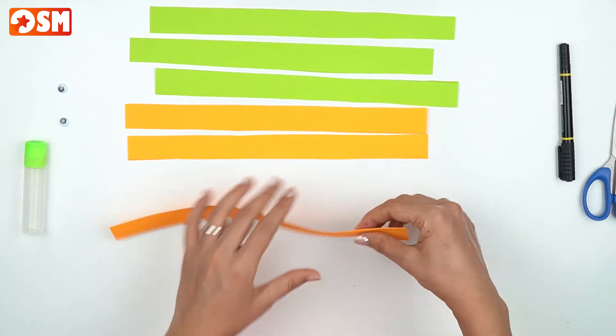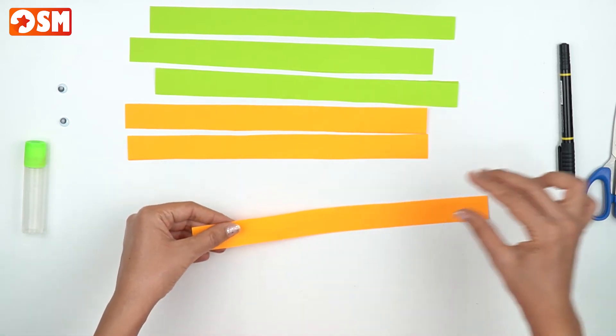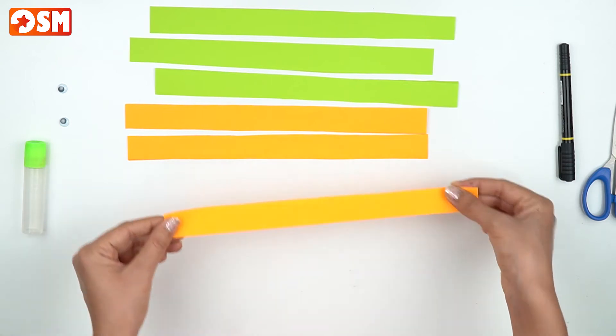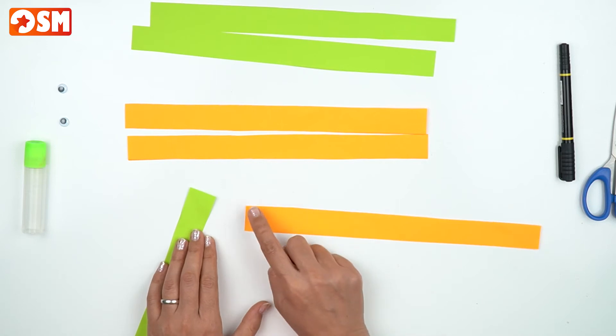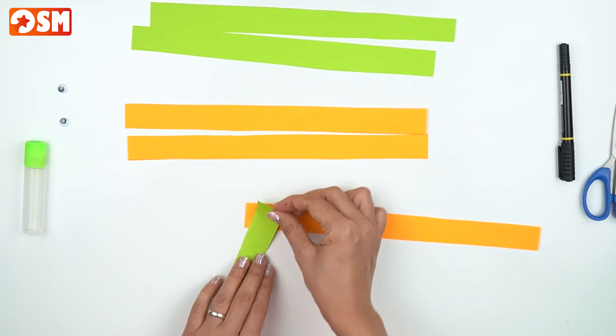Alright, now it's time to start the accordion fold. First of all, we are going to grab one orange and one green strip and we are going to glue two paper strips together.